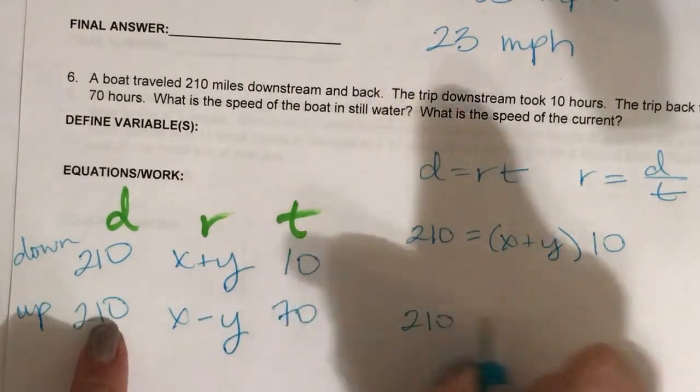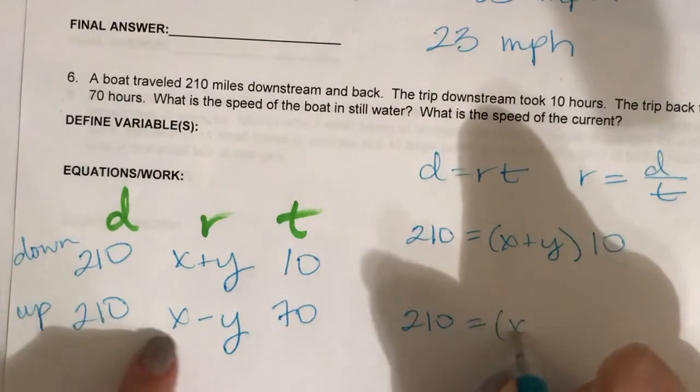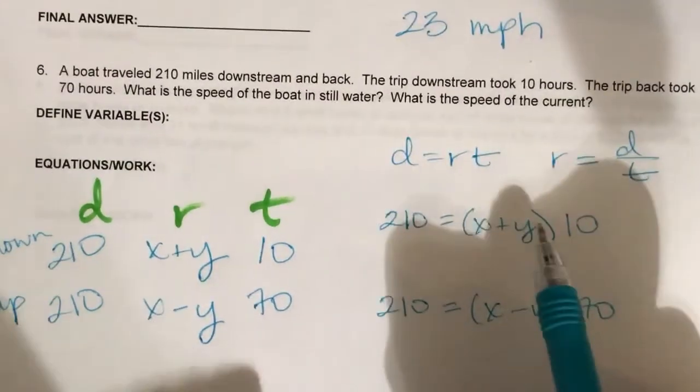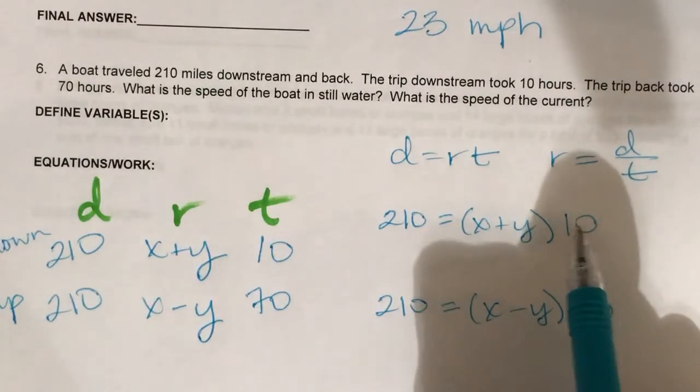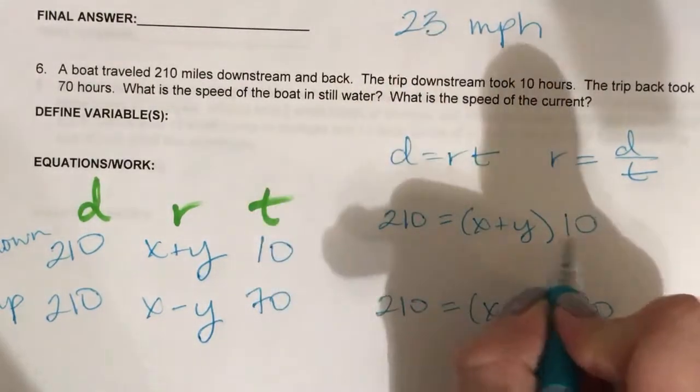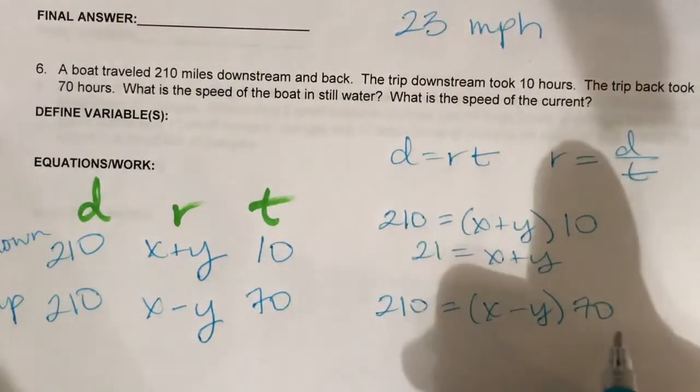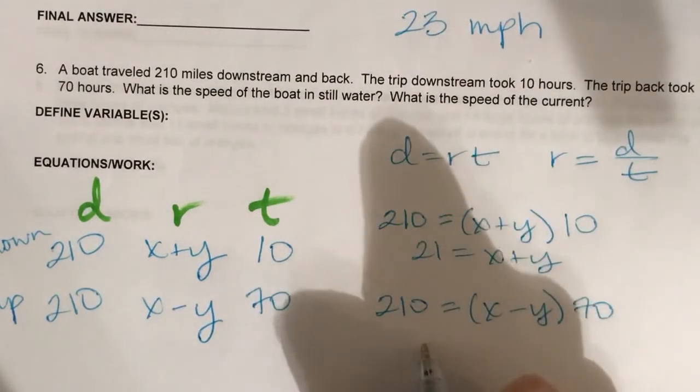Similarly for the upstream, 210 equals x minus y times 70. For both of these you would first want to divide by the time. Dividing by 10 you get that, dividing by 70 you get that.